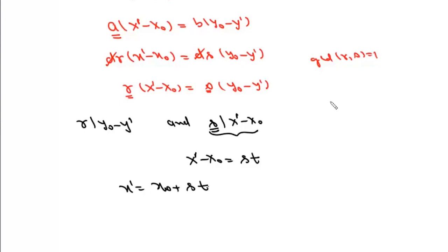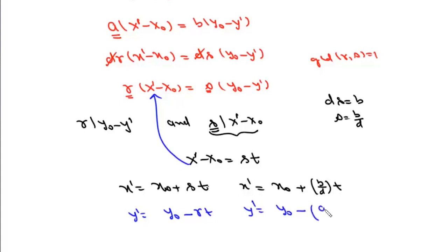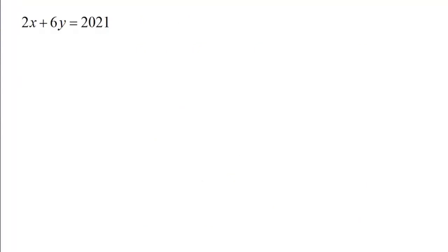Now what is s? Since d·s = b, then s is simply b/d. So we can write the general solution as x' = x0 + (b/d)·t. And substituting x' - x0 = s·t, we get y0 - y' = r·t, so y' = y0 - r·t, that is y' = y0 - (a/d)·t. So this is how we find the general solution to the linear Diophantine equation.